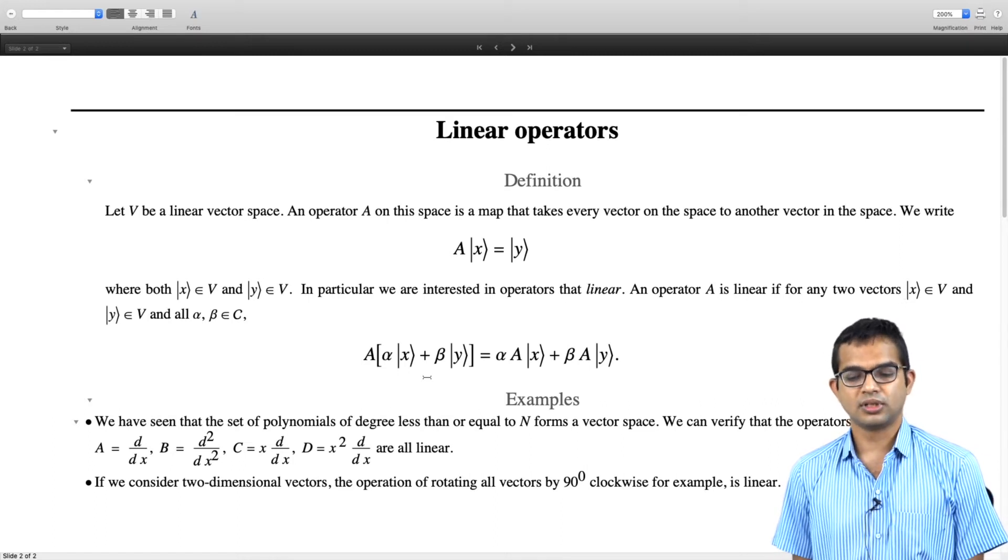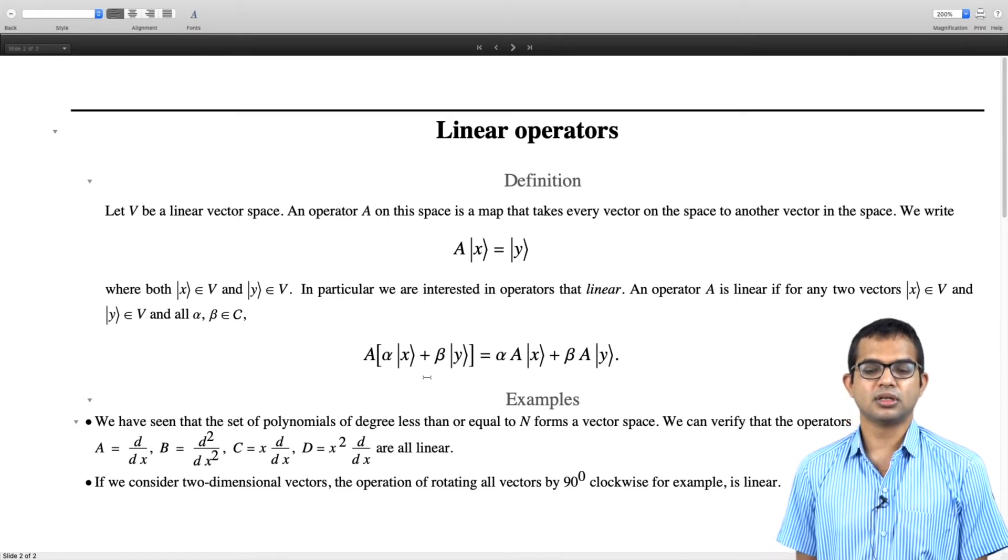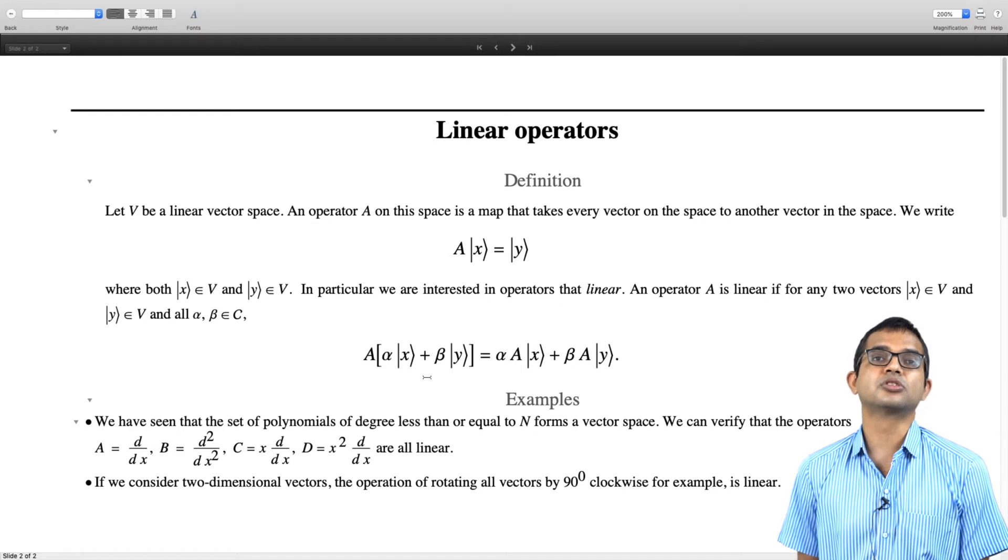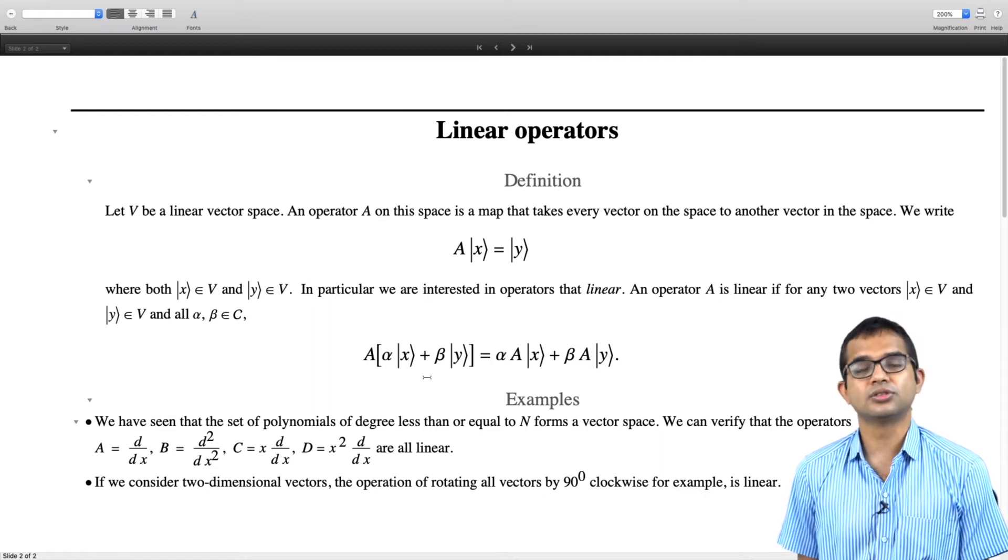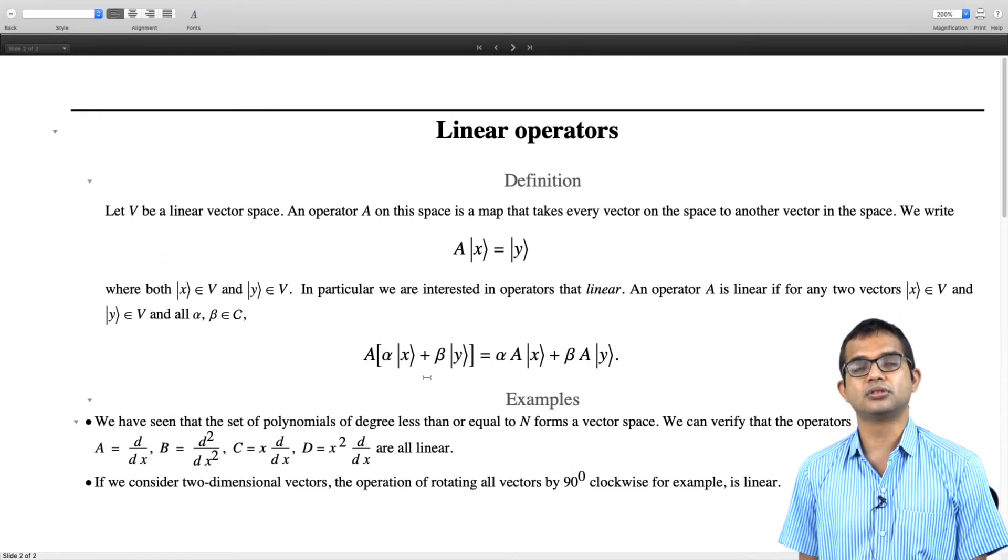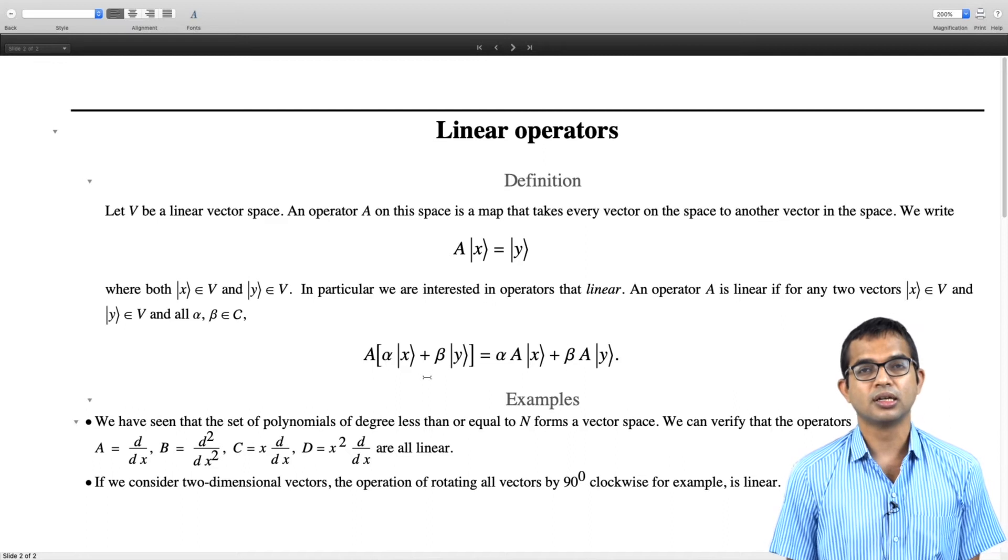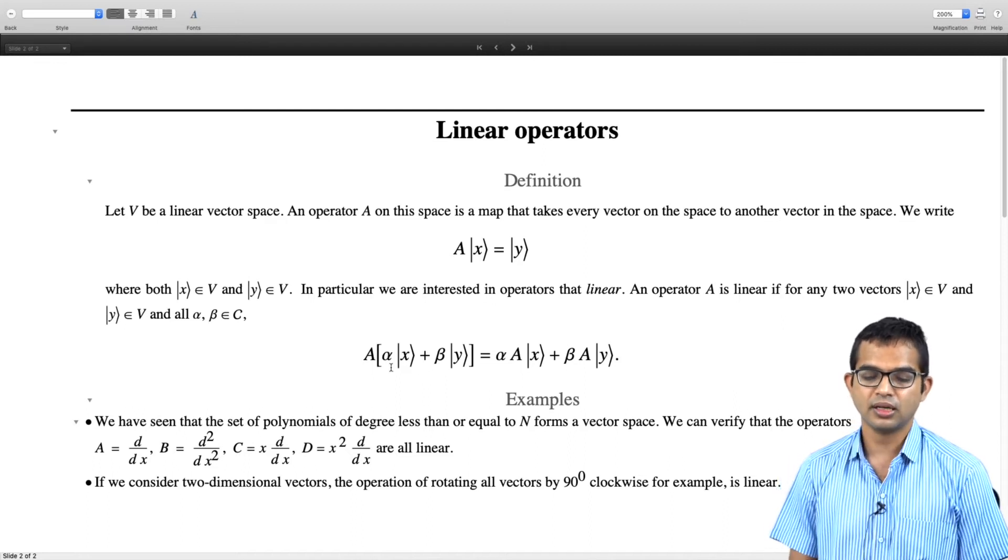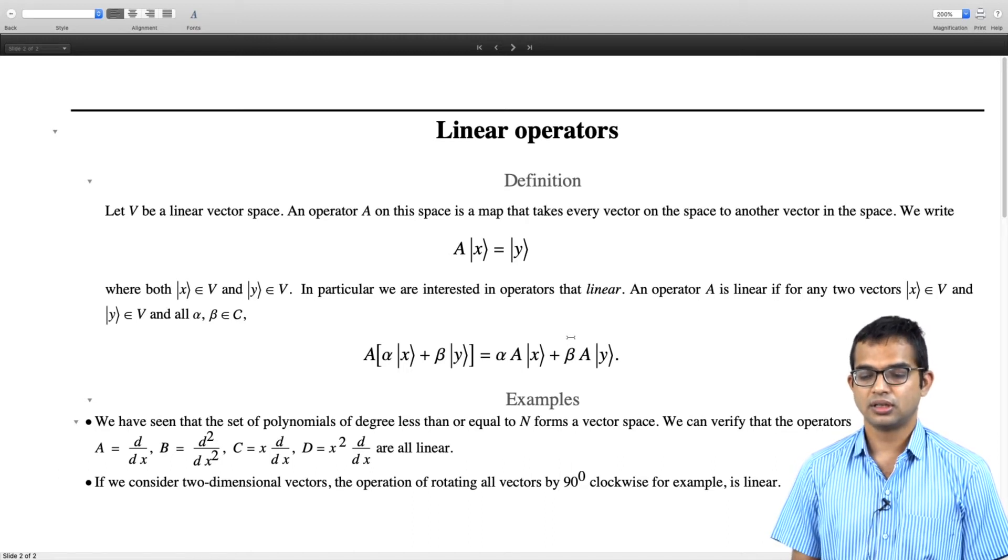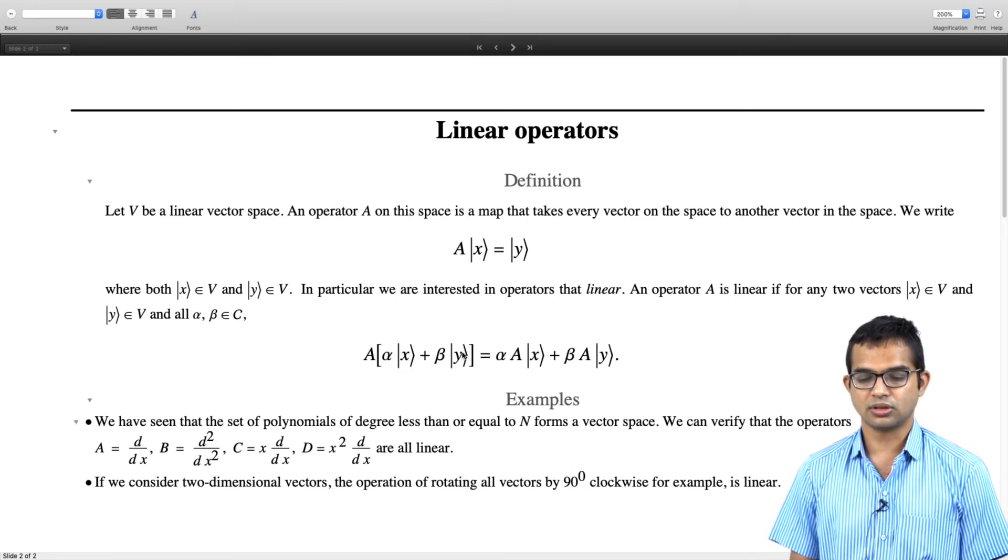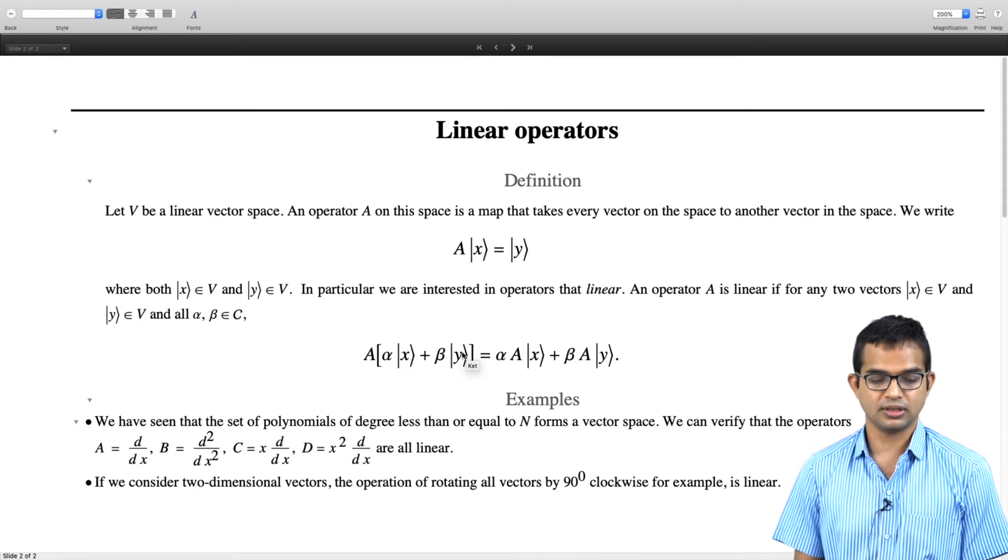On the other hand, something like if you are given a polynomial and you take the square of this polynomial, if that is your operation, then it is not going to be a linear operation. It is going to be a non-linear operation as you can verify. Simply plug in two vectors and use your operation and check whether this condition holds. If not, then it is not linear.